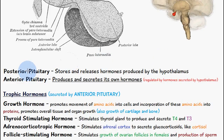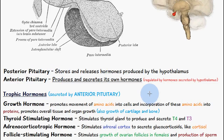The posterior pituitary stores and releases hormones produced by the hypothalamus, while the anterior pituitary produces and secretes its own hormones and is regulated by hormones secreted by the hypothalamus. We'll start with the trophic hormones secreted by the anterior pituitary.